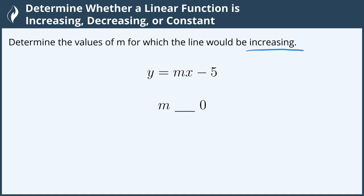The increasing portion comes from our rate of change, or m, and because we want it to be increasing or getting larger, this means that I'm looking for a larger or positive number. So to define this, we will say that we want m to be greater than 0, and therefore we will have a rate of change that is increasing, and we're all done.